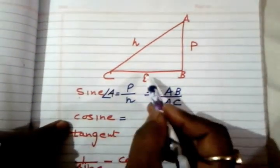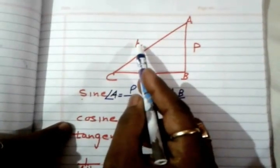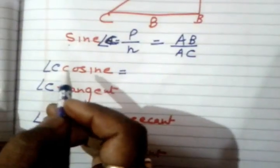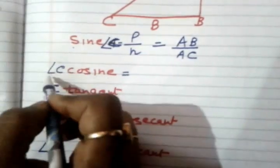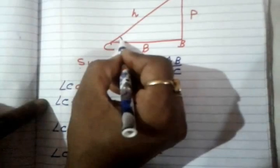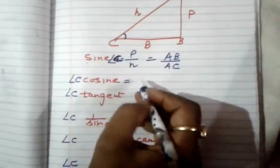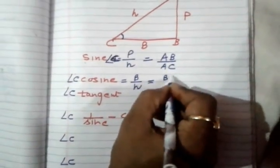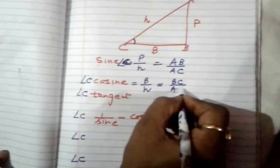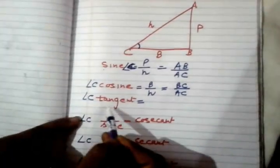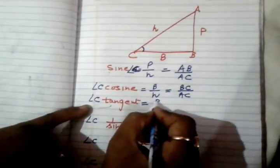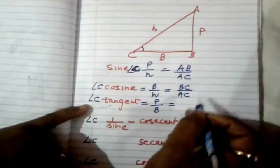For angle C here, we are calculating these ratios for this angle C. For angle C, it is B upon H, which is equal to BC upon AC. Now tangent for angle C, tangent for angle C is P upon B, which is equal to AB upon BC.